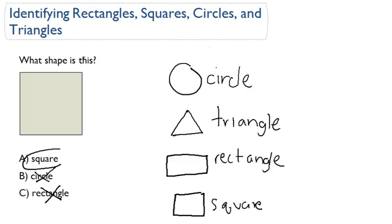All right, so it's a square. It's a square because it has four equal sides. This side, this side, this side, and this side are all equal. So that's a square.